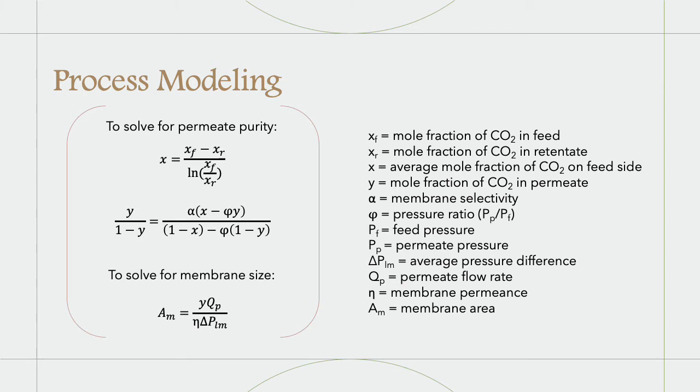The final equation calculates the area of membrane needed to achieve the desired separation. This allows us to find the cost of the membranes, and this calculation involves the average driving force for separation given by the average pressure difference and the CO2 membrane permeance. The permeance is another membrane parameter which measures how easily the CO2 can move through the membrane.